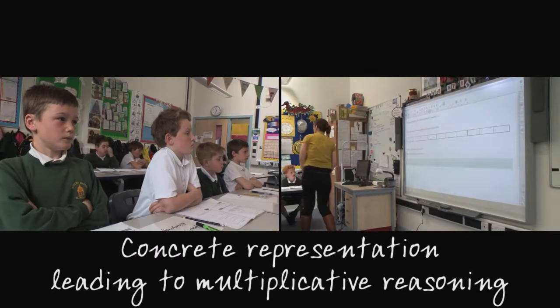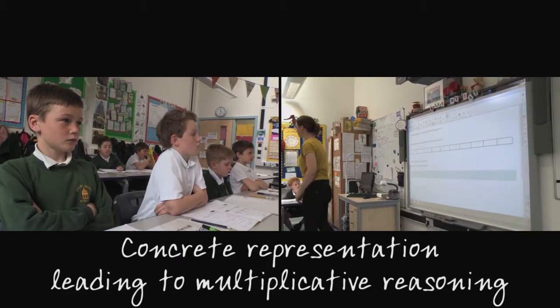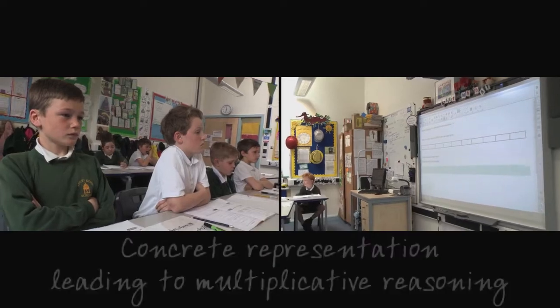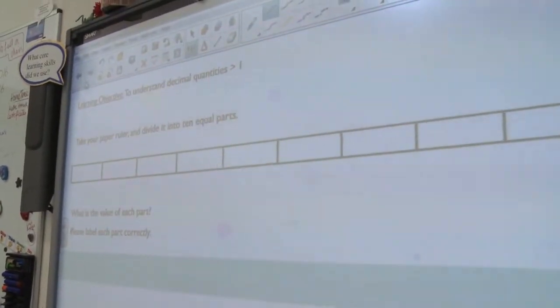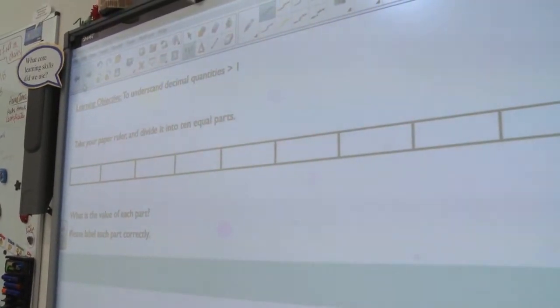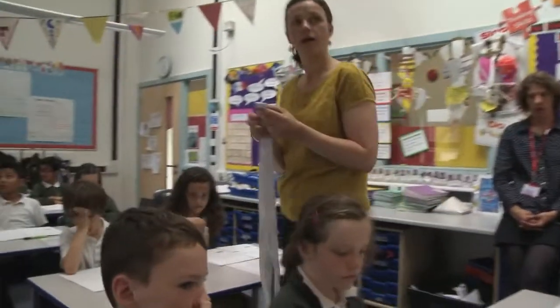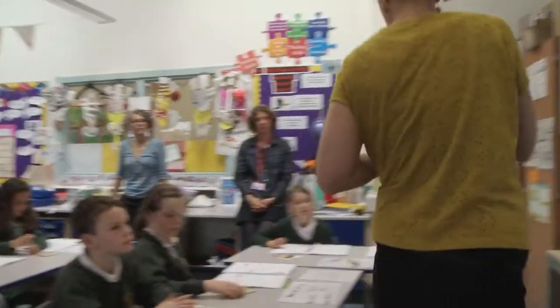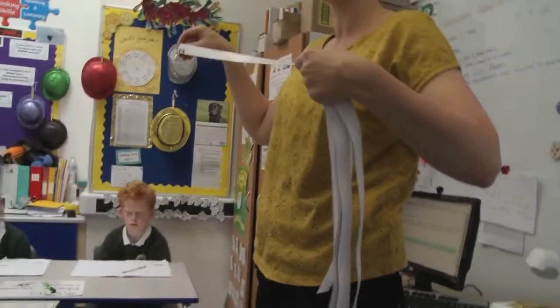We are now going to get a paper ruler. They are over here. We're going to go back to thinking about tenths of a metre. With your paper ruler, make sure you're on the centimetre side, and I would like you to divide it into ten equal parts.